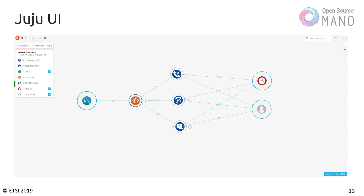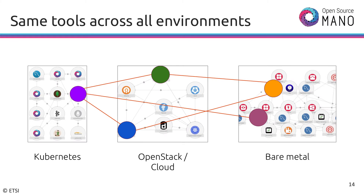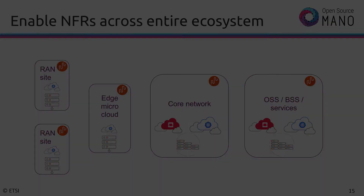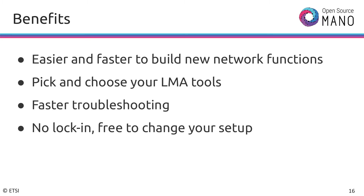Together with charms, there is a platform called Juju where there is a UI to display the bundles, how they connect together, and how they operate. You can also use it to deploy on different targets like Kubernetes environments, OpenStack environments, as well as public clouds and bare metal. The main benefit of this approach is the same set of tools and same automation everywhere, making it easier to create, debug, and trace in case of any problems in production. This enables all the non-functional requirements in the entire telco ecosystem — at the edge, core network, OSS, BSS, or other service layer things.